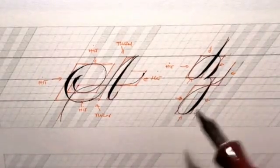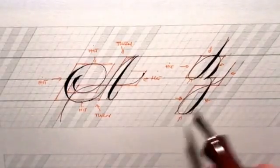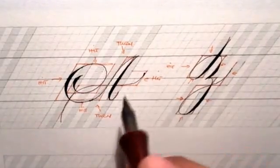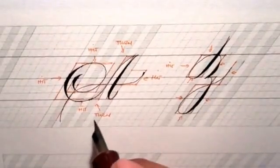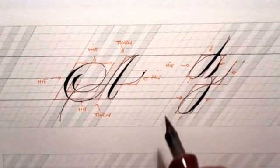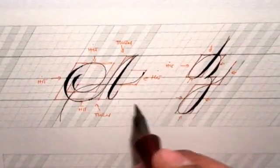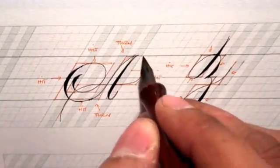One of the reasons I've left this much space between the letters—and obviously don't practice A and Z together, practice a line of A's—is so that you can make little notes.